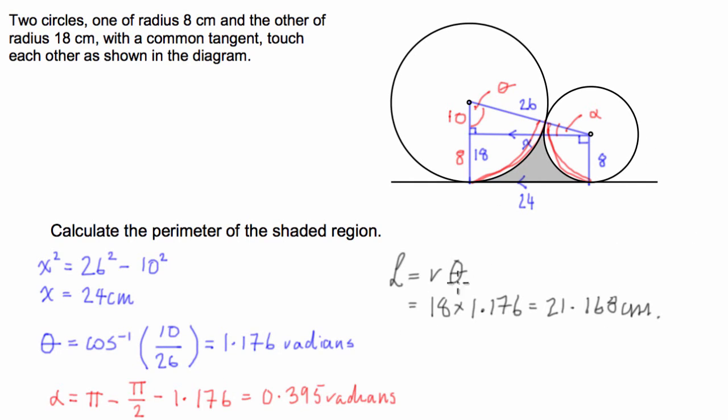So we then find arc length number 2, which is going to be equal to, instead of theta, it's going to be r times alpha, which is equal to 8 times alpha. Now it's going to be r times alpha plus 90 degrees, or pi over 2, because that arc length is subtended by not only alpha, but this 90 degree in the rectangle as well.